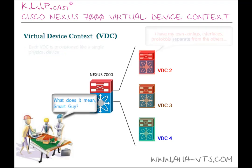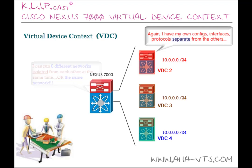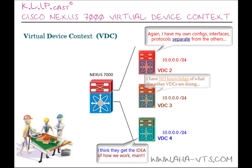What does that mean? It means I can have eight different networks, or the same network — for example, the 10/8 network — and one admin network, each with their own routing and switching capabilities and port designations, all running on a single Cisco Nexus 7000 chassis with other VDCs having no knowledge of each other.